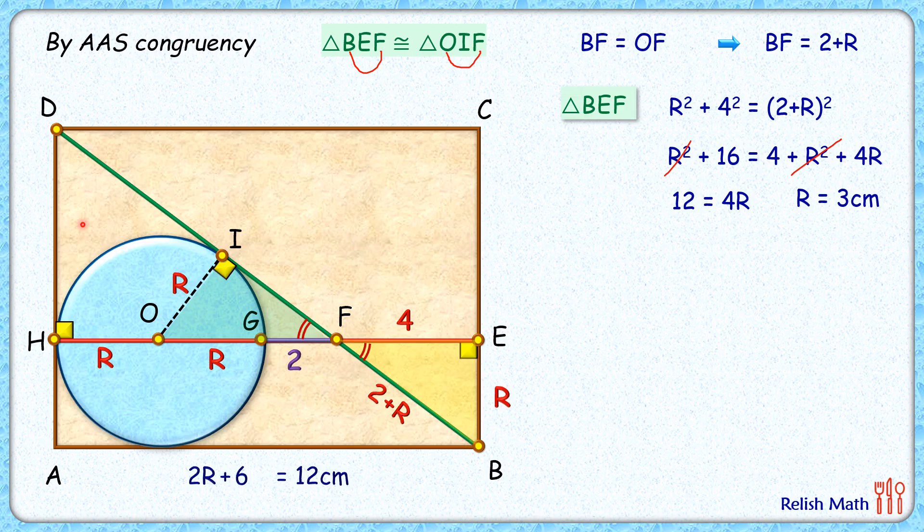For the area we need the height also. Now AH is same as BE, or r centimeters. So we need to find DH length here.